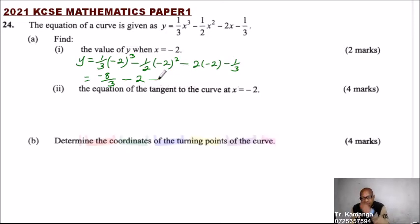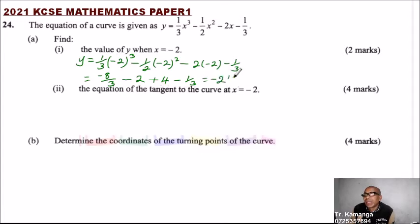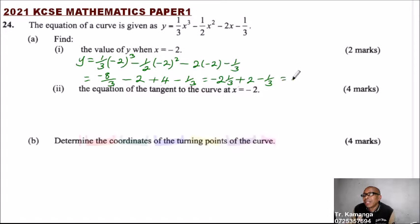Then minus 2 multiplied by minus 2 gives you positive 4, and finally we have minus one-third. So this equals minus 2 and one-third, minus 2 plus 4 gives plus 2, then minus one-third. That gives you minus 3, implying this equals minus 3 plus 2, which gives you minus 1. So y equals minus 1 when x equals minus 2.